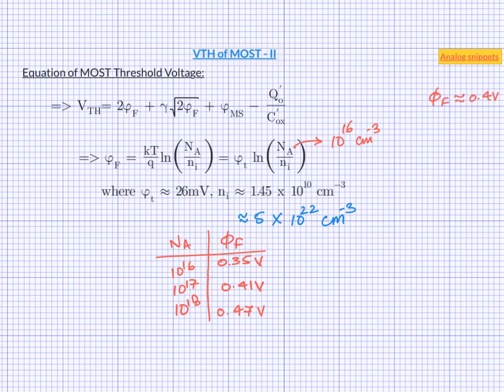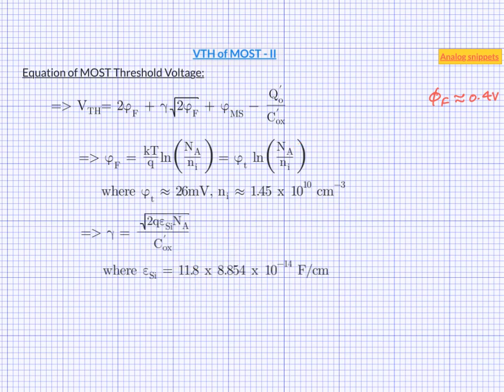Now, let us turn our attention to the second term, in particular the factor gamma. Gamma, which is also known as body effect coefficient, is given by slightly more complicated equation. This equation contains 4 terms. Q is the charge of electron, epsilon s i is the permittivity of the silicon, which is given by this value.